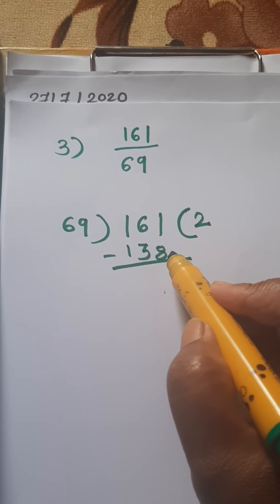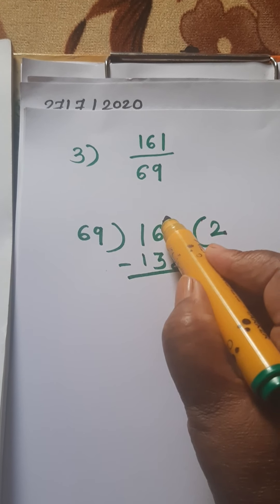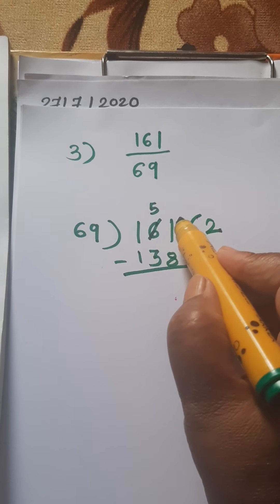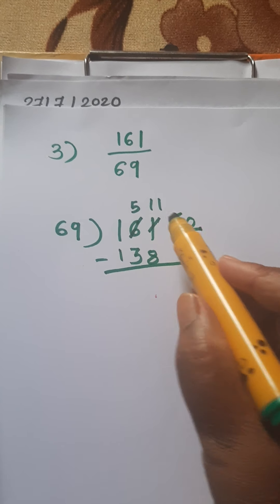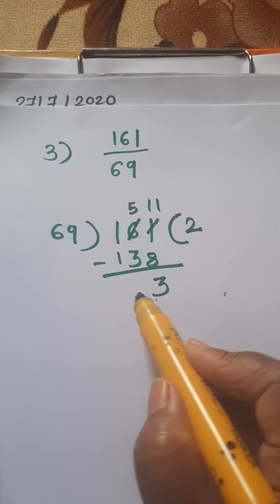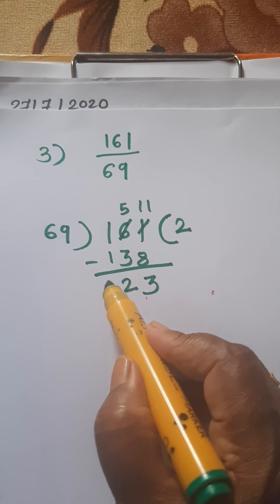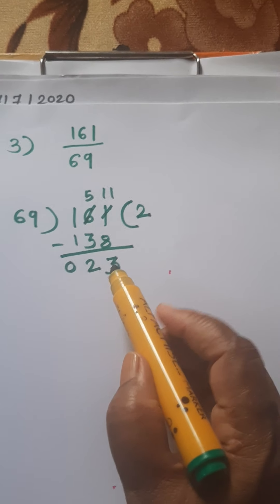1 minus 8, not possible, so take borrow. Here remain 5 and here 10 plus 1 is 11. 11 minus 8 is 3. 5 minus 3 is 2. 1 minus 1 is 0.